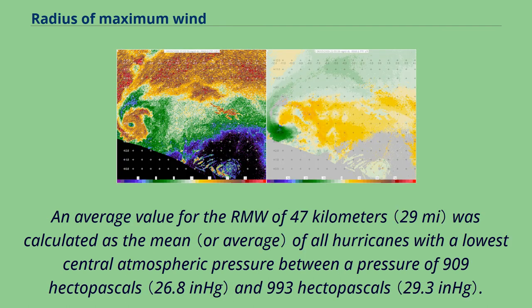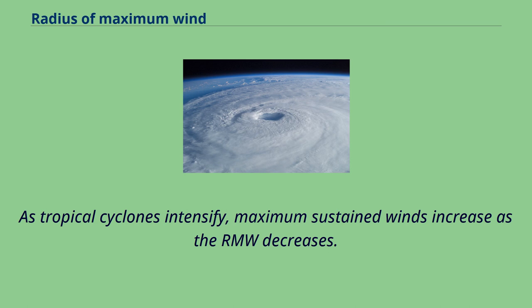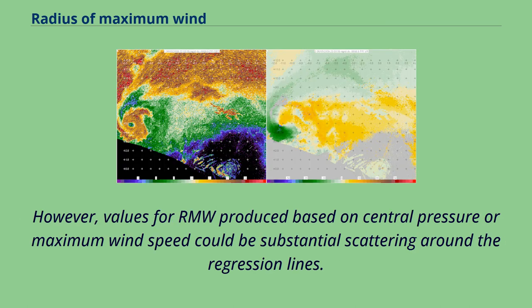An average value for the RMW of 47 kilometers was calculated as the mean of all hurricanes with the lowest central atmospheric pressure between 909 hectopascals and 993 hectopascals. As tropical cyclones intensify, maximum sustained winds increase as the RMW decreases. However, values for RMW produced based on central pressure or maximum wind speed could show substantial scattering around the regression lines.